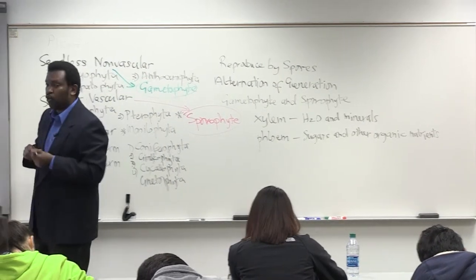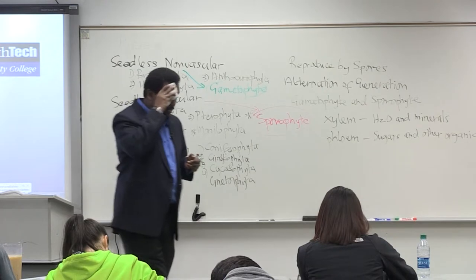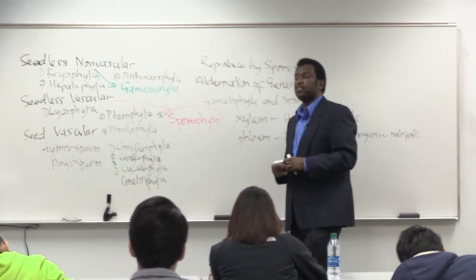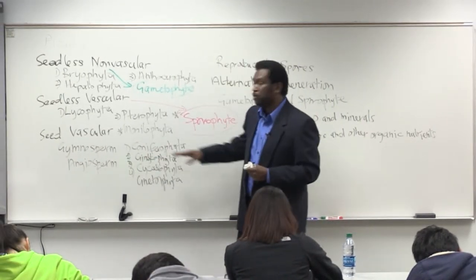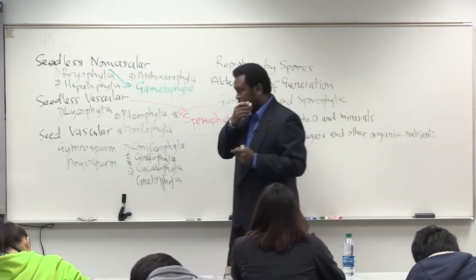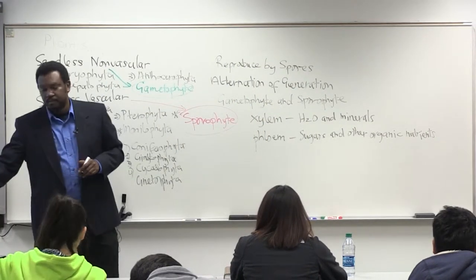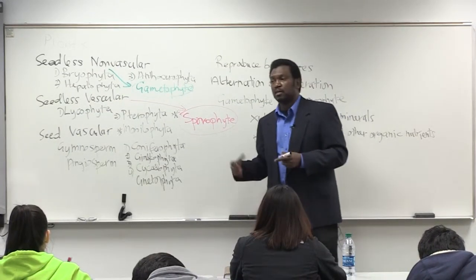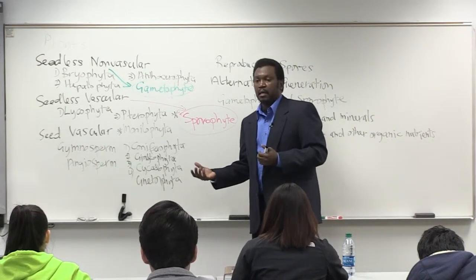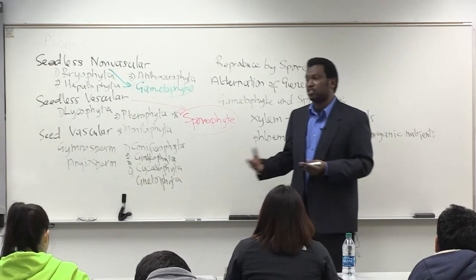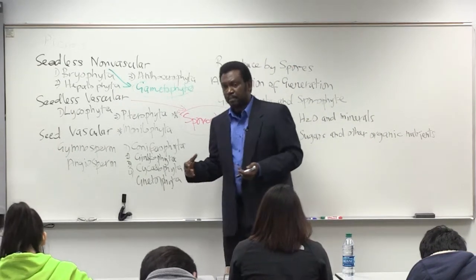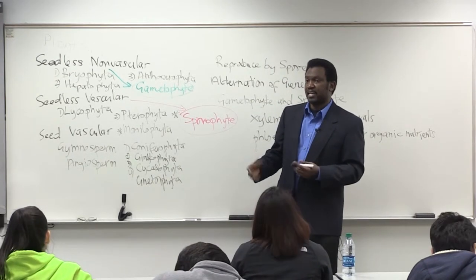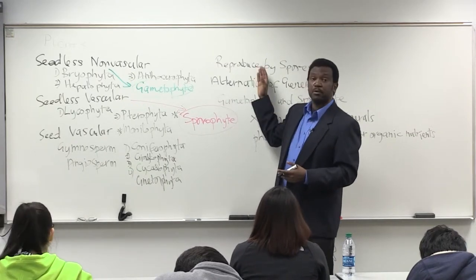You can also call gymnosperms the cone-bearing plants. They all develop cones in which their seeds develop. The male cone contains the male gametophyte and is also called the pollen cone. The female cone, also referred to as the seed cone, develops the female gametophyte. In these cones, the seed gets fertilized, and they reproduce by seeds.